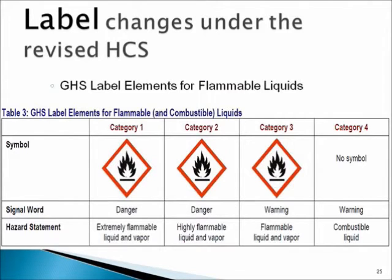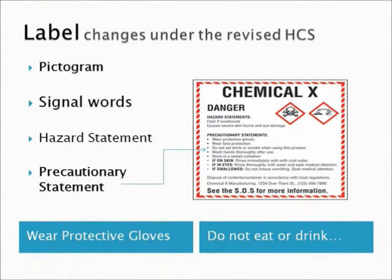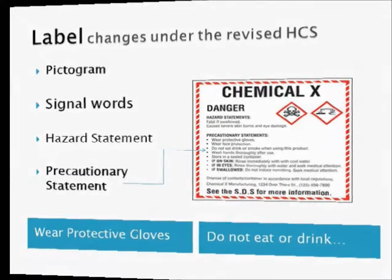Here are the label elements for a flammable chemical with pictogram, signal word, and hazard statement for each category within the hazard class flammability. For category one, the symbol is flame, the signal word is 'Danger,' and the hazard statement is 'Extremely flammable liquid.' Some lower-level hazard categories do not use signal words or pictograms, as shown for category four. In addition to hazard statements, a precautionary statement is required which tells how to prevent exposure and what to do if exposed.